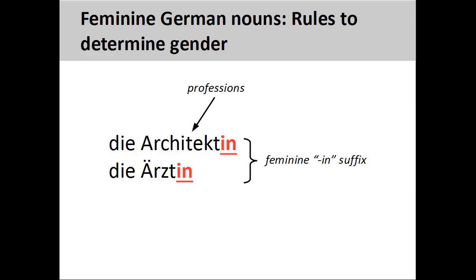As we have seen, nouns designating female beings are feminine. As we discussed in an earlier presentation, nouns describing professions are masculine. We can make these nouns feminine by adding an –in suffix to the noun, such as 'Architektin,' meaning woman architect. Some of these nouns also require the addition of an umlaut over the noun vowel, such as 'Ärztin,' meaning woman doctor.